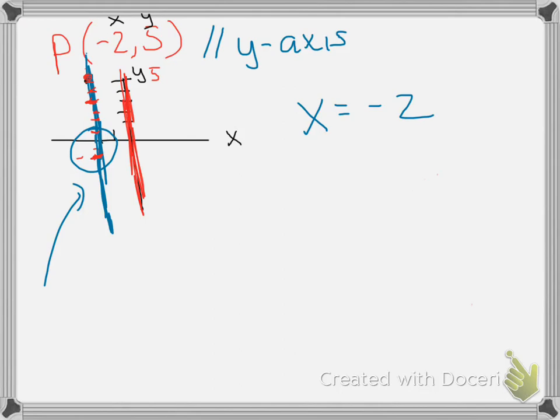And if it says parallel, draw a line parallel to the y-axis. If it says parallel to the x-axis, then draw a line going across that would be parallel to the x-axis. And whichever axis it touches, that's what you would write down as x equals negative 2 or y equals negative 5, depending on your situation.